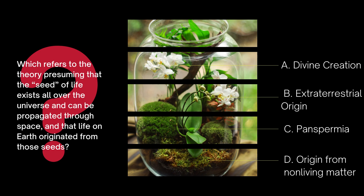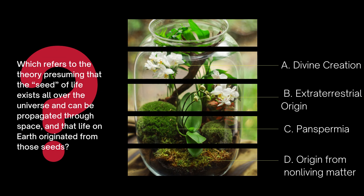Let's start with this question: which refers to the theory that presumes that the seed of life exists all over the universe and can be propagated through space, and that life on earth originated from those seeds? A. Divine creation. B. Extraterrestrial origin. C. Panspermia. D. Origin from the non-living matter. The answer will be given at the end of the lesson.